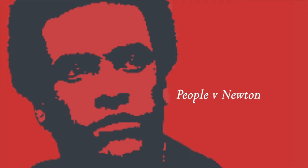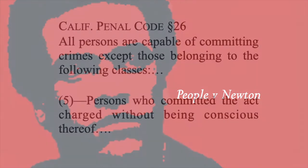The reversal was on the ground that it was error not to charge the jury that unconsciousness can negate the voluntariness of Newton's firing shots. A California statute provided the legal authority for the court's holding. It states that all persons are capable of committing crimes except those belonging to the following classes — and we get down to number five: persons who committed the act charged without being conscious thereof.